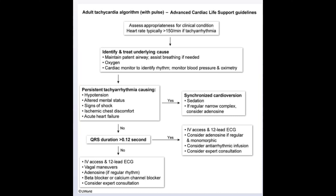If QRS duration is not more than 0.12 seconds, obtain IV access and a 12-lead ECG, perform vagal maneuvers, use adenosine if the rhythm is regular, and consider a beta blocker or calcium channel blocker. Consider expert consultation. This is the adult tachycardia algorithm overview.